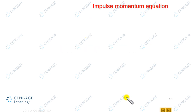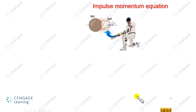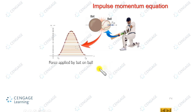There are many situations in which the force acting on an object is not constant but varies with time. For example, when a batsman hits the ball, the period of contact is very small but the force is huge. You can observe this here in the diagram.